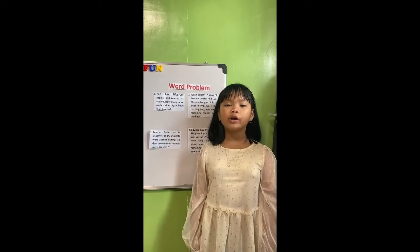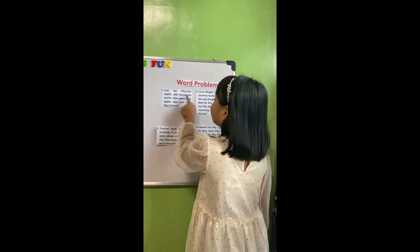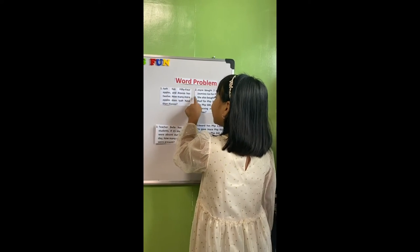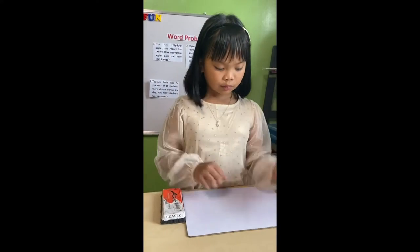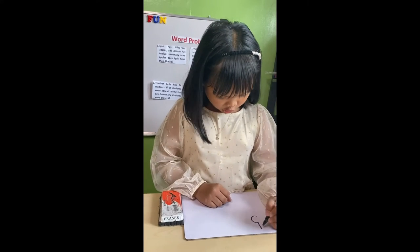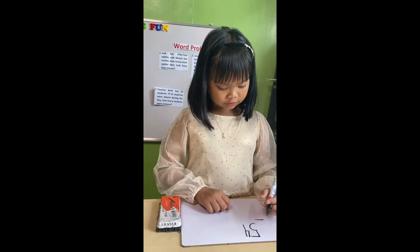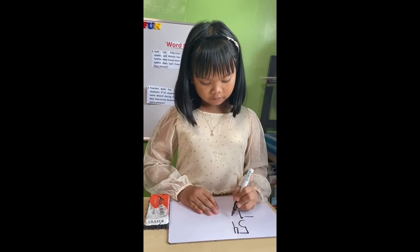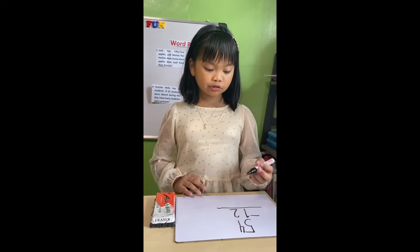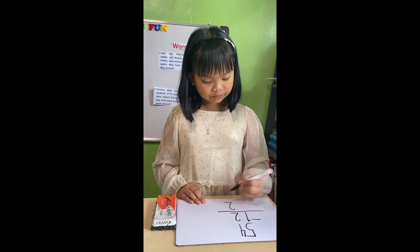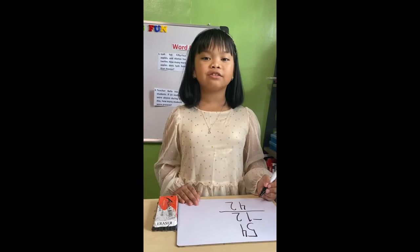Let's go to the word problem. Number 1. Ia has 54 apples and Alonso has 12. How many more apples does Ia have than Alonso? 54 minus 12: 4 minus 2 equals 2, 5 minus 1 equals 4. So our answer is 42 apples.